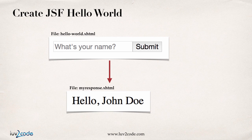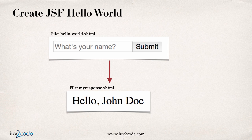We're going to create a very simple Hello World program with JSF. We're going to start with an HTML form that's going to prompt the user for their name. They'll type in their name, they'll hit submit. Then we'll have a second page called MyResponse XHTML, and it's simply going to say hello, whatever the user's name is. It's going to make use of two files: an input form and a simple response page.